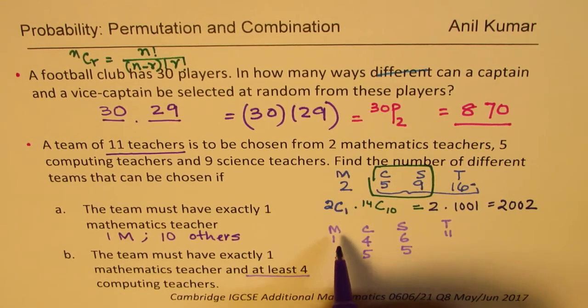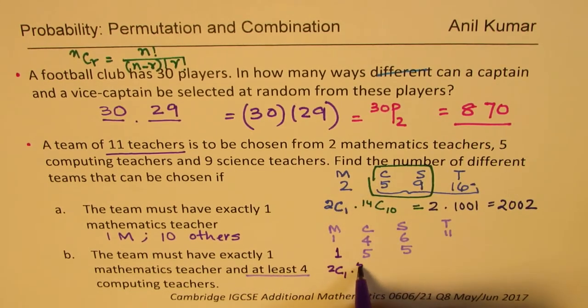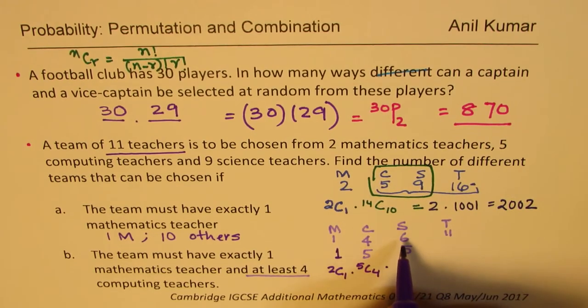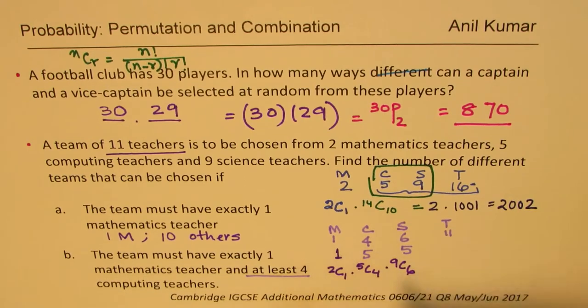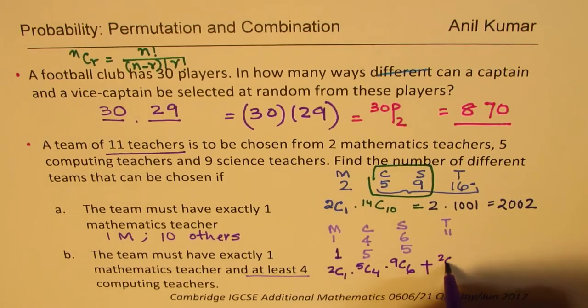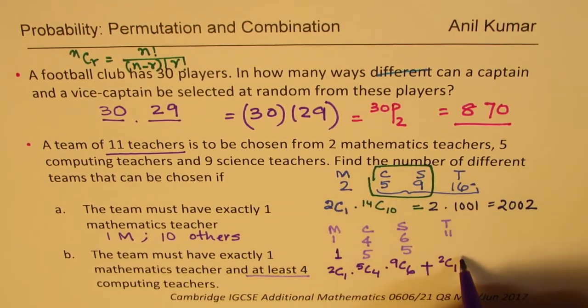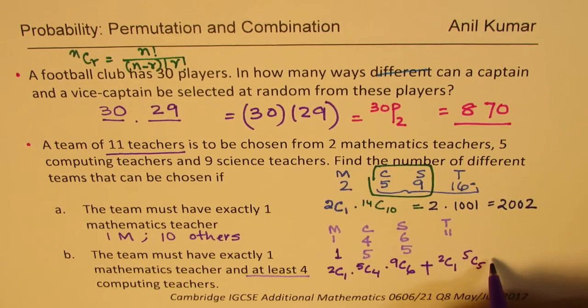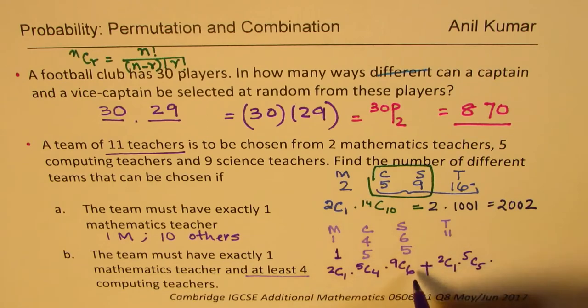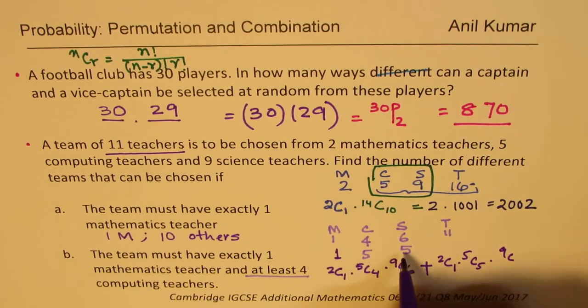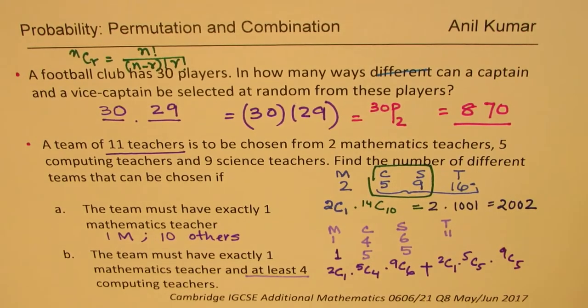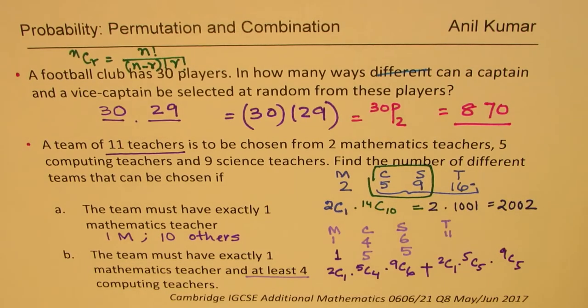So writing this will be: out of 2 mathematics teachers, 1 is being selected, so 2C1 times choice out of 5, so 5C4, this choice is out of 9, 9C6. That is the first combination. Second combination could be 1 mathematics out of 2, and then 5 computing from 5, all of them, that means this is number 1, and 9 we have to select 5 out of 9, so 9C5. So that becomes your answer. You can just add this and write down your answer. Let's calculate this answer.